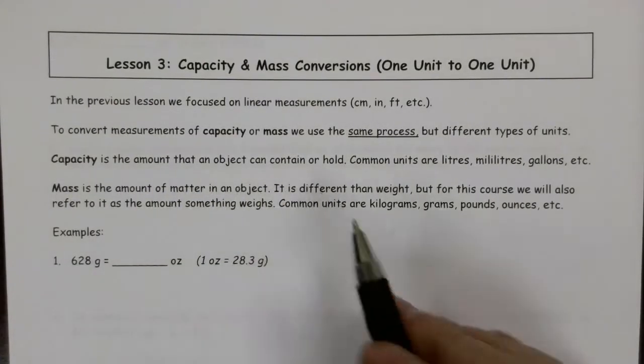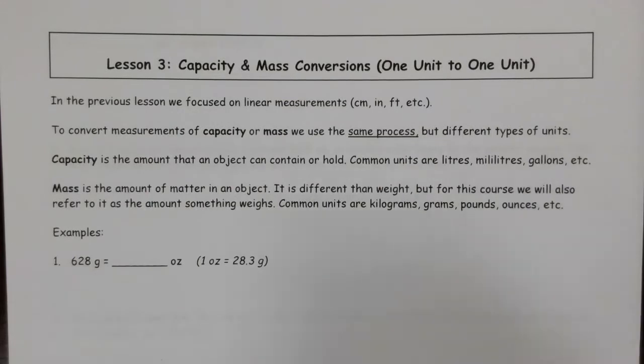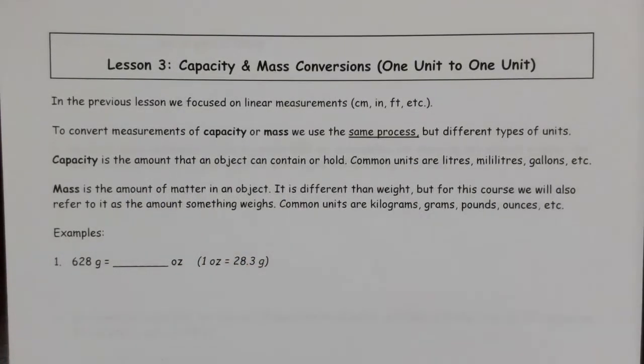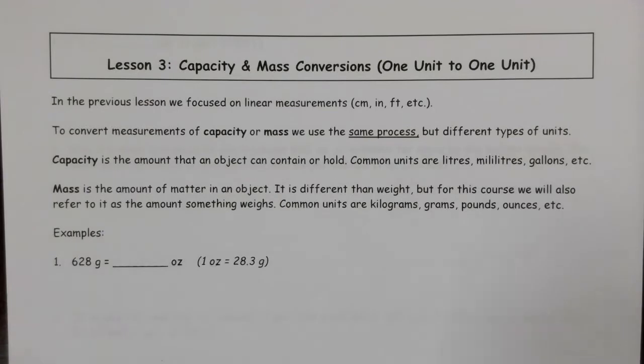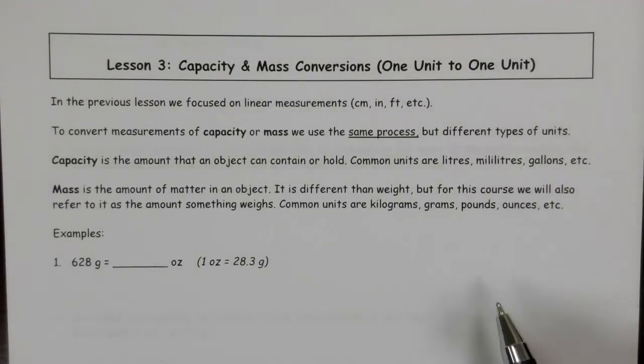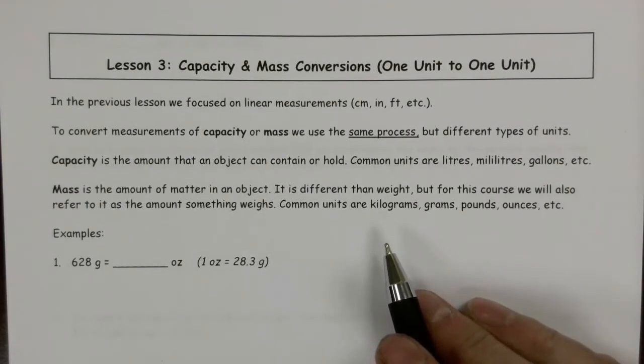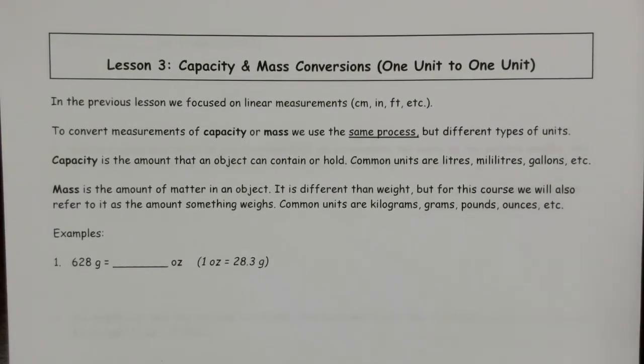Capacity is the amount that an object can hold. It's a measure of its volume. Mass is the amount of matter in an object. It is different than weight. Weight is a measure of how much the earth is pulling you down or the planet that you're on is pulling you down. That is related to mass, but it is a slightly different idea. With mass, we're looking at kilograms, grams, pounds, ounces, and so on. Let's jump in and do some questions so that you can get a sense of how this pattern of conversion works.